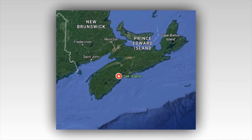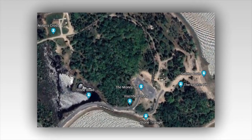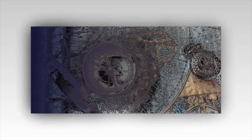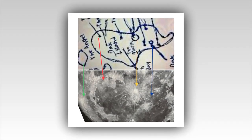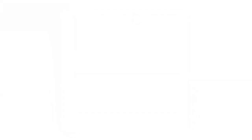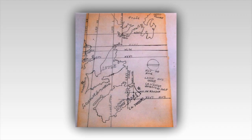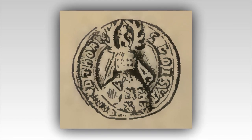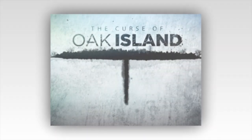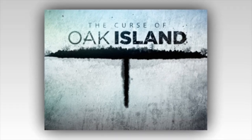Online forums and discussion groups buzz with activity as enthusiasts scrutinize every inch of the map and cross-reference it with historical records, geological surveys, and previous discoveries. In essence, Zena Halpern's map has become a symbol of the enduring human fascination with mystery and the unknown. It represents the hope that, somewhere within the layers of history and legend, lies the truth about Oak Island. Whether the map is a genuine Templar artifact or a clever piece of historical fiction, its impact on the ongoing quest for answers is undeniable. As the search continues, Zena's map remains a touchstone for those who believe that Oak Island holds secrets yet to be discovered, a reminder that the journey of exploration — with its twists, turns, and occasional dead ends — is as valuable as the treasure itself.